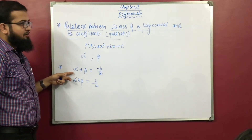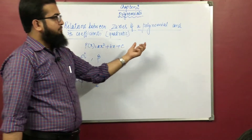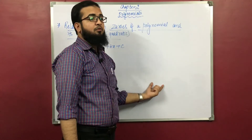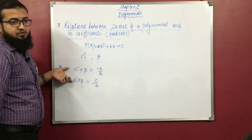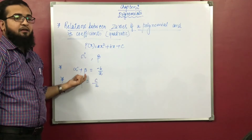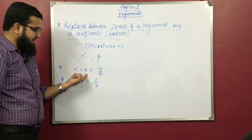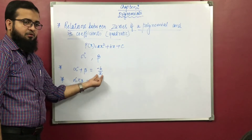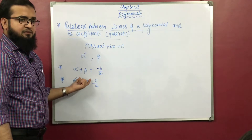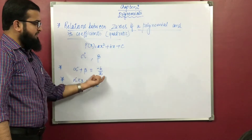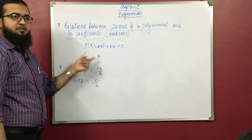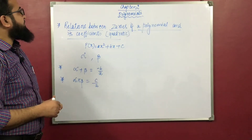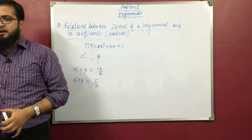These two relations are to be remembered always. When you find the zeros of a quadratic polynomial, you also have to prove these two relations — that is, verify them. You add the zeros and check it equals minus b upon a, and multiply the zeros and check it equals c upon a. If it is equal, then the relation is justified and proved.